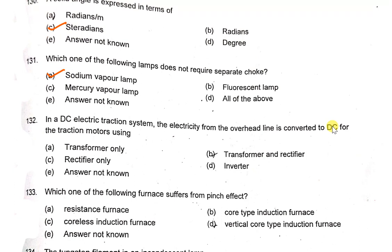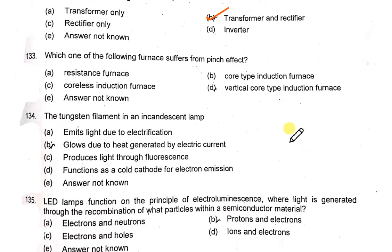In a DC electric traction system, electricity from the overhead line is converted to DC for traction motors using transformers and rectifiers. Which furnace suffers from the pinch effect? It is the core type induction furnace.